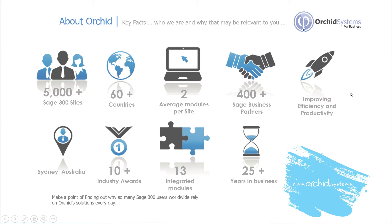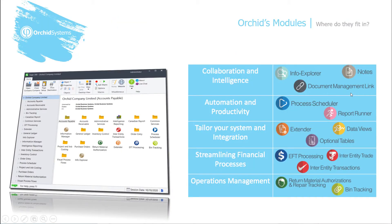We're all about improving efficiency and productivity, and our modules fall broadly into the following five categories: collaboration and intelligence, automation and productivity, tailoring your system and integration, streamlining financial processes, and operations management.